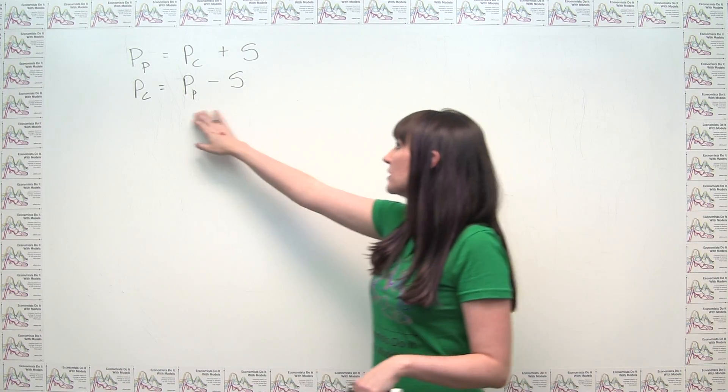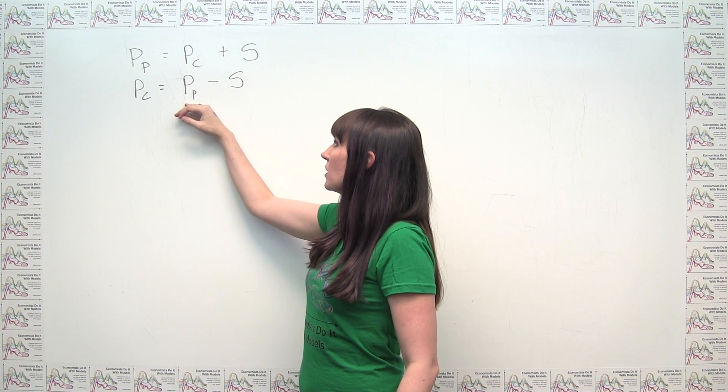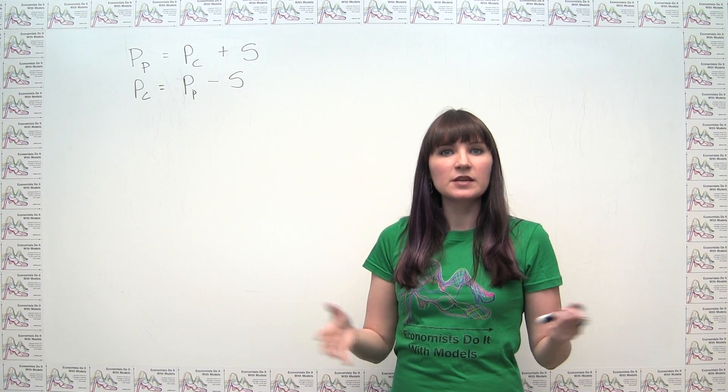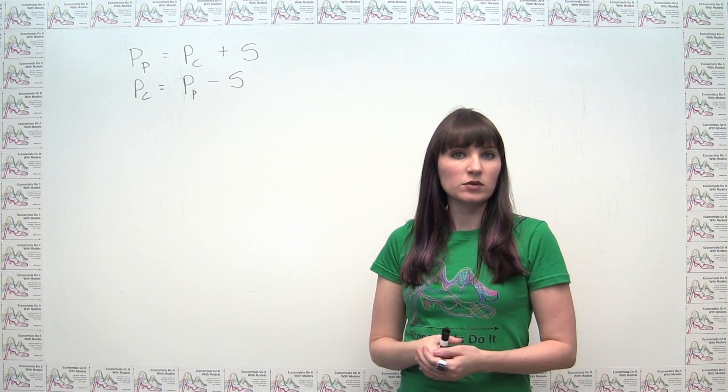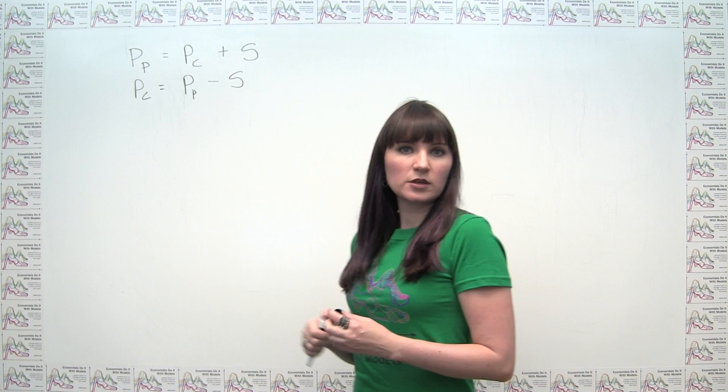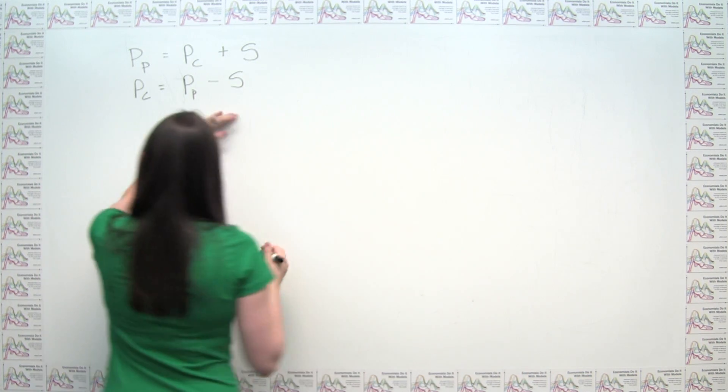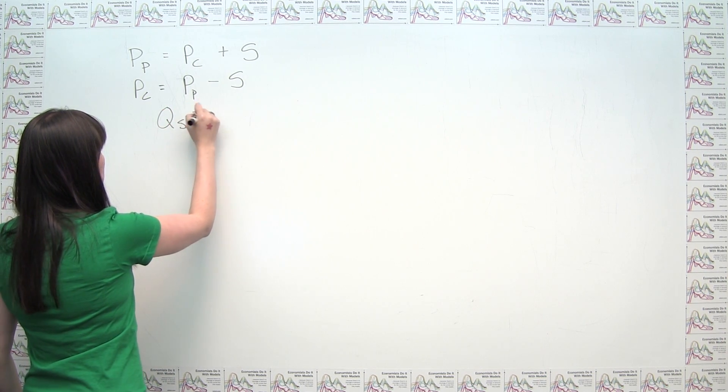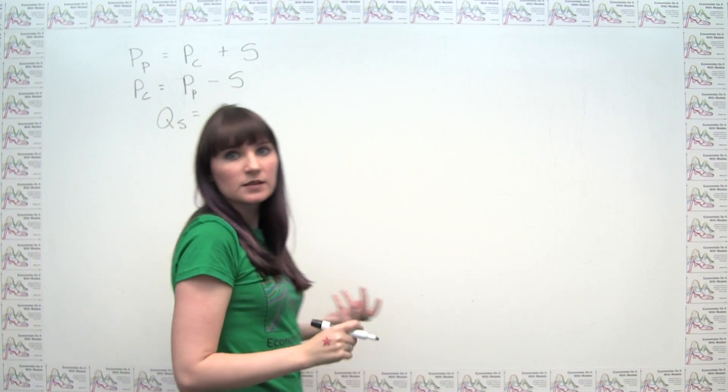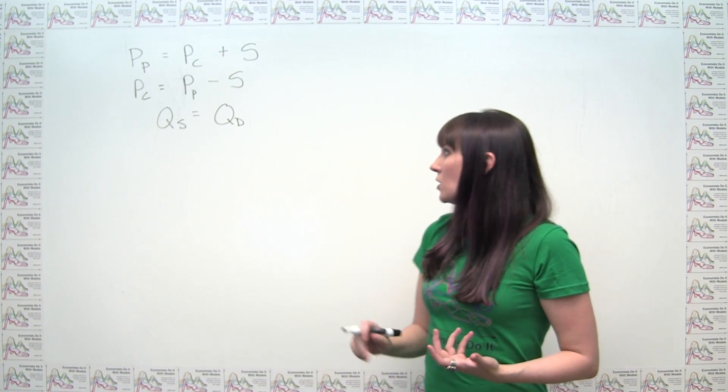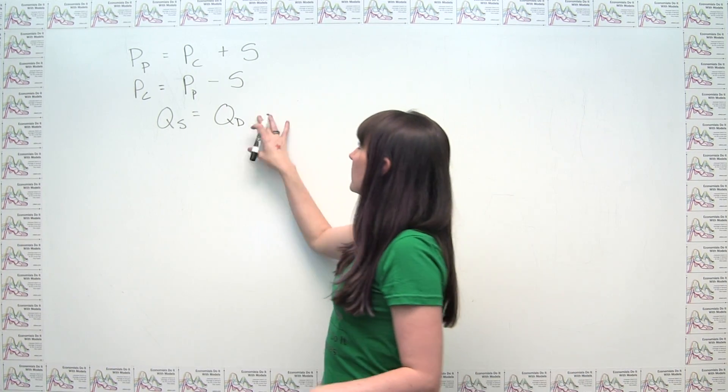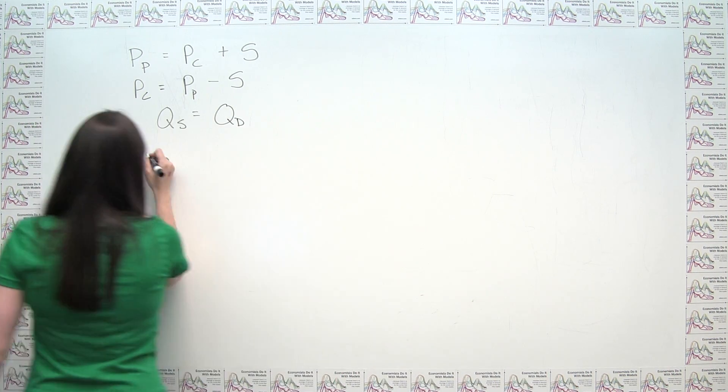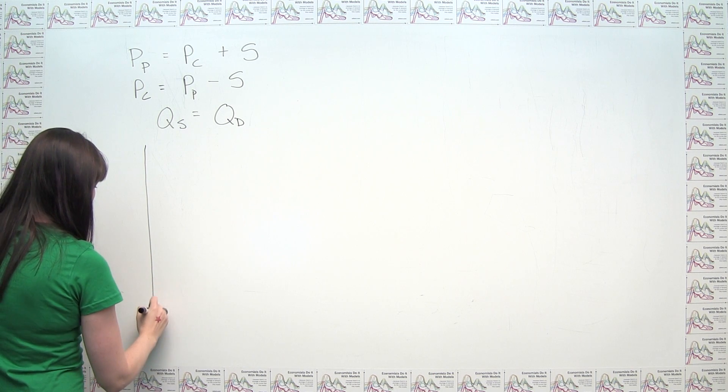We can take this relationship between the price to the consumer and the price to the producer and add in our typical equilibrium condition to pretty easily find the market equilibrium when we have a subsidy. So our regular equilibrium condition is just that we have economic equilibrium when the quantity supplied in the market is equal to the quantity demanded in that market. So we can go through, we can either do this algebraically if we had equations for supply and demand curves, or we can do this graphically by just drawing a supply and demand diagram.